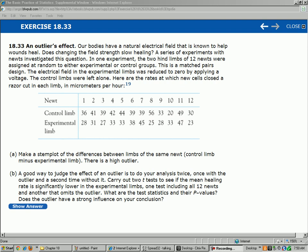Hello, this is Chapter 18, Question 33. It's called An Outlier's Effect. It says, our bodies have a natural electrical field that is known to help wounds heal.